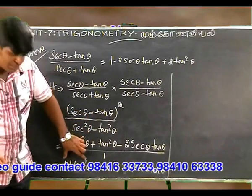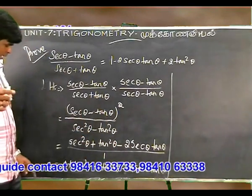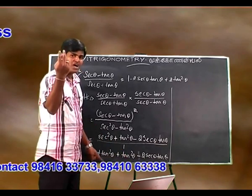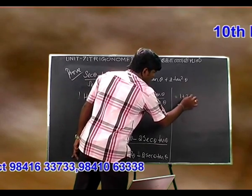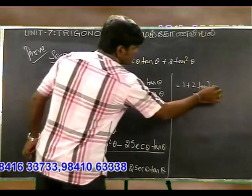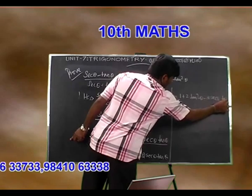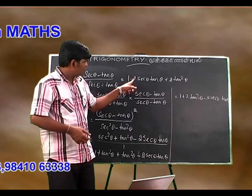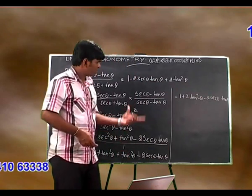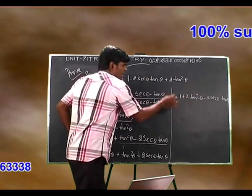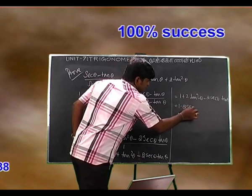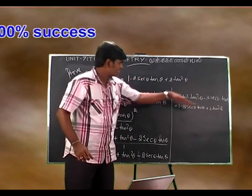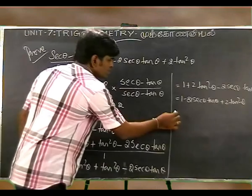1 plus tan squared theta plus 2 tan squared theta, minus 2 secant theta tan theta. So the result equals 1 plus 2 tan squared theta minus 2 secant theta tan theta. The RHS is also 1 minus 2 secant theta tan theta plus 2 tan squared theta. So LHS equals RHS.